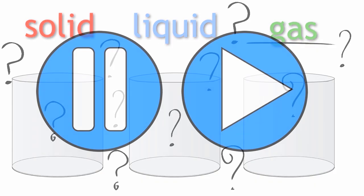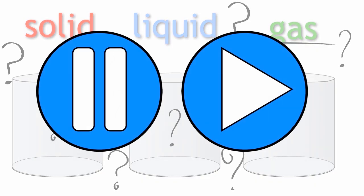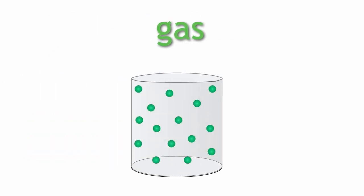Pause the video and restart it when you think you have the answer. The answer is the particles in a gas are spaced out and move about very quickly in random directions. Did you get it right?